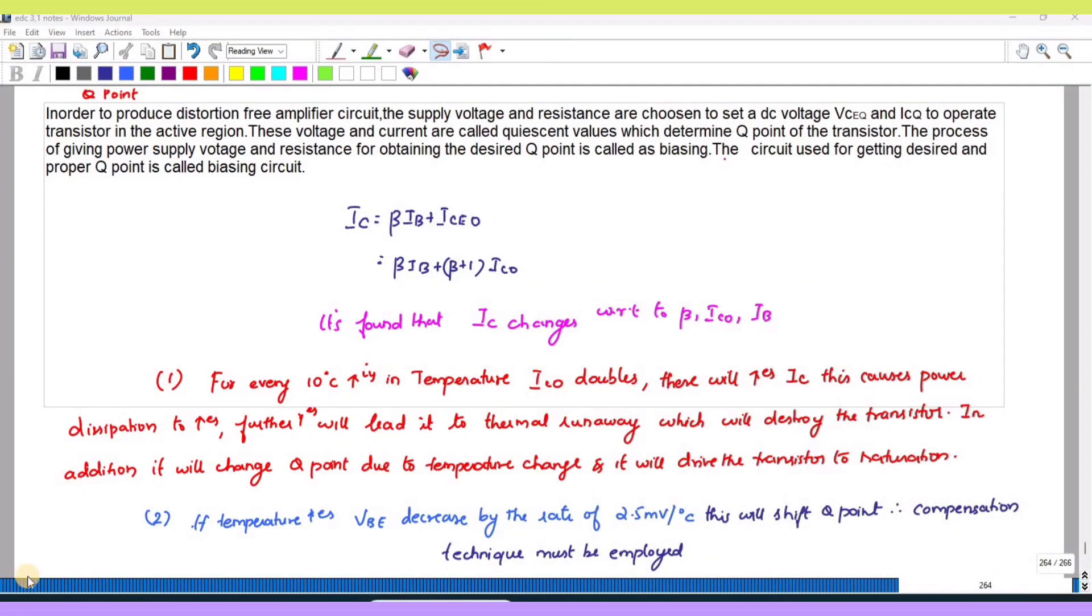In this video we are going to discuss about Q-point, the quiescent point. In order to produce a distortion-free amplifier circuit, the supply voltage and resistance are to be chosen in order to set a DC voltage VCE(Q) and IC(Q) to operate the transistor in the active region.